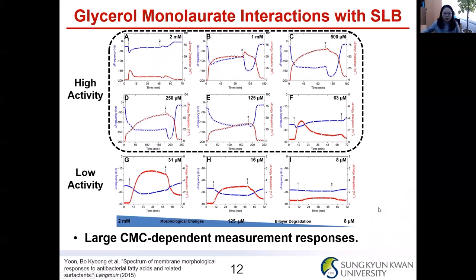Similar to the CMC-dependent response observed for lauric acid, we also observed this in the GML case. Above the CMC value of GML, we see high membrane activity, but low activity below the CMC. Especially around the intermediate concentration range between 100 micromolar to 1 millimolar, we see a huge decrease in frequency and increase in dissipation.